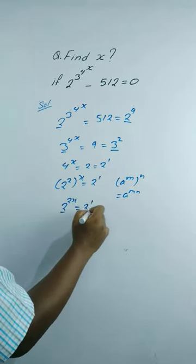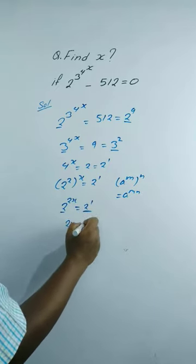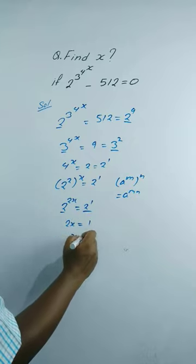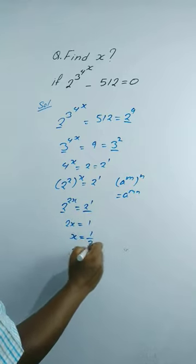Again, since the bases are equal, therefore 2x equals to 1, so x equals to 1 by 2. This is your solution.